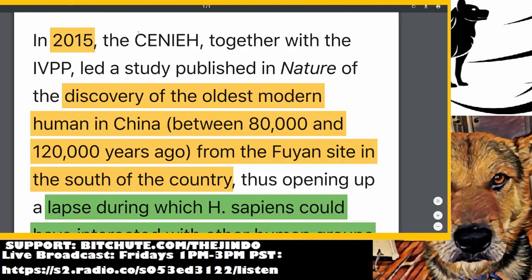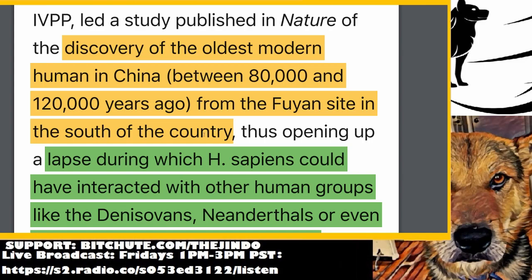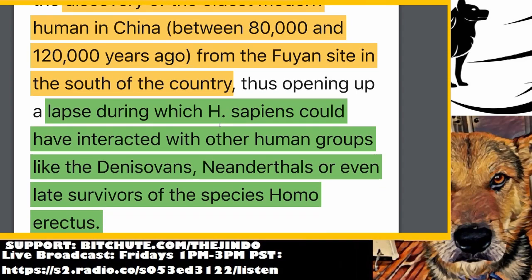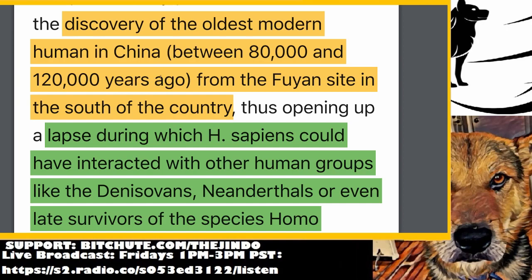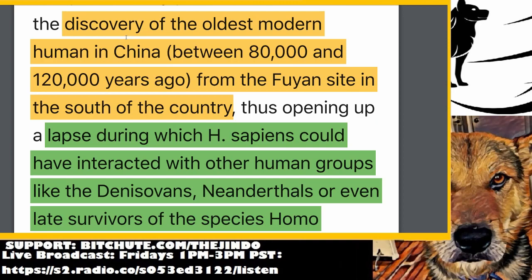In 2015, Senia also published in Nature magazine the discovery of the oldest modern human in China — from between 80,000 and 120,000 years ago, from the Fuyang site in the south of the country. They found a bit of a skull. That's the oldest modern human in China, and that individual would have belonged to the Indo-Malayan group, or the Oriental group, whatever you want to call it.